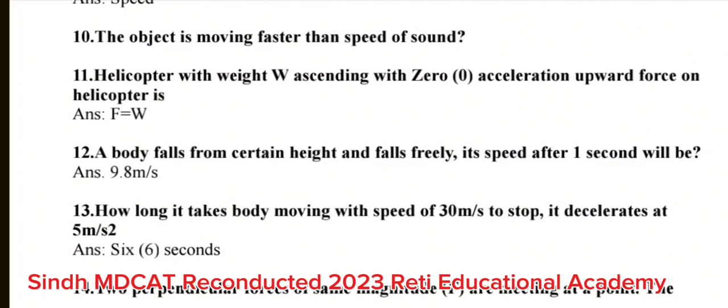Question number 11: Helicopter with weight W ascending with 0 acceleration upward force on helicopters. The correct answer is F is equal to W. Question number 12: A body falls from certain height and falls freely. Its speed after 1 second will be? The correct answer is 9.8 meter per second. Question number 13: How long it takes body moving with speed of 30 meter per second to stop? It accelerates at 5 meter per second square. The correct answer is 6 seconds.